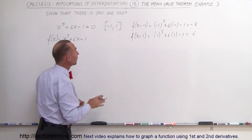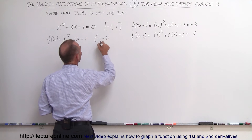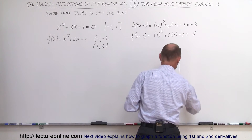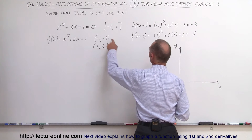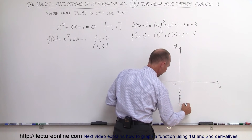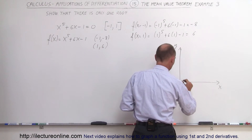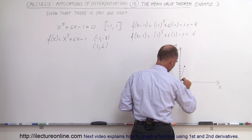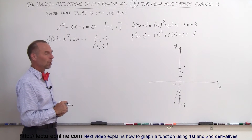So those are the corresponding y-values: when x = -1, y = -8, and when x = 1, y = 6. The two points on the curve are (-1, -8) and (1, 6). We can plot these — there's our y-axis and x-axis. The first point is at (-1, -8) and the second at (1, 6). Drawing a straight line between them gives us the secant line connecting the two endpoints of the interval.